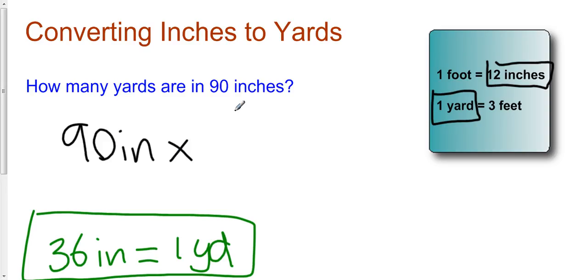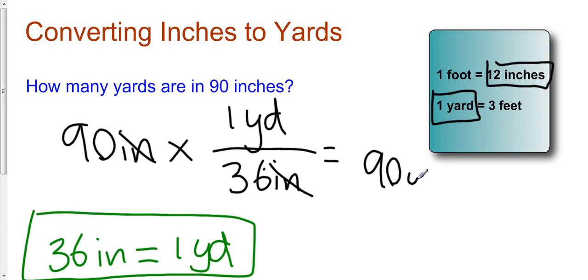And we're going to multiply by what I want, which is one yard, and divide by what I don't want, which is the 36 inches. What do we get? Inches are going to cancel out, so I have 90 over 36 yards.